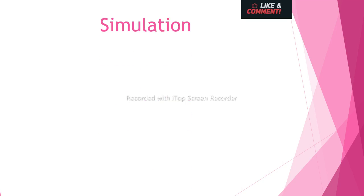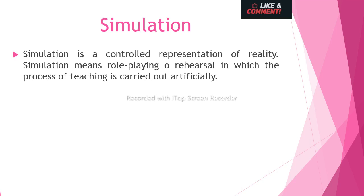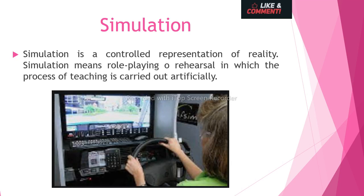Simulation: what happens is an artificial environment is created so that any individual person can be aware of real-life situations and may be aware of the problems and may be able to deal with them. Simulation is a controlled representation of reality. It means role playing and rehearsal in which the process of teaching is carried out artificially. Online games are a simulation example — you think you are playing in real life.